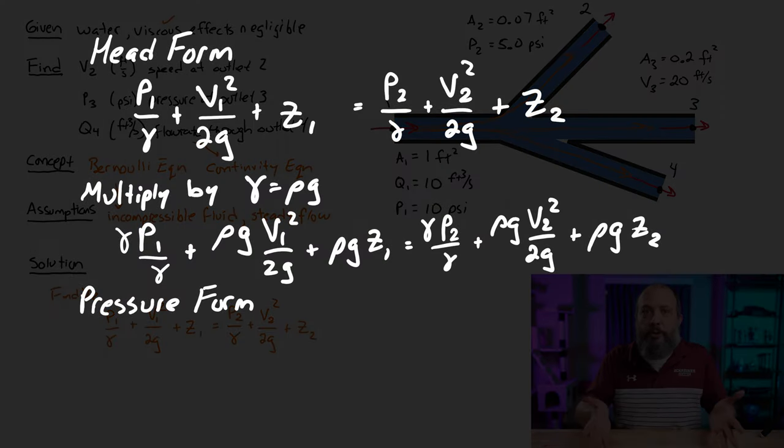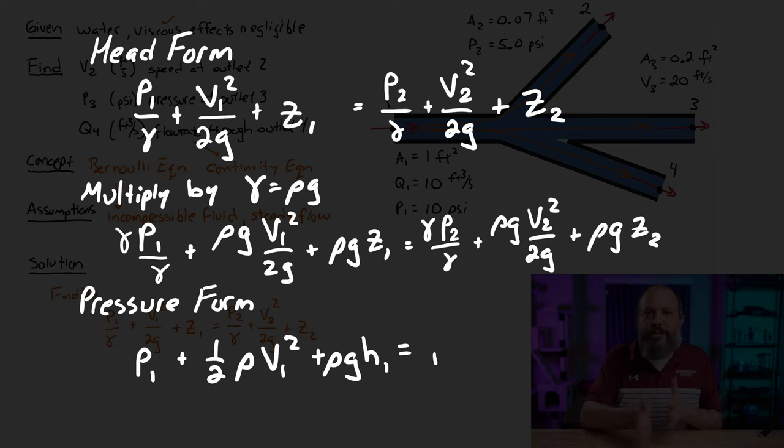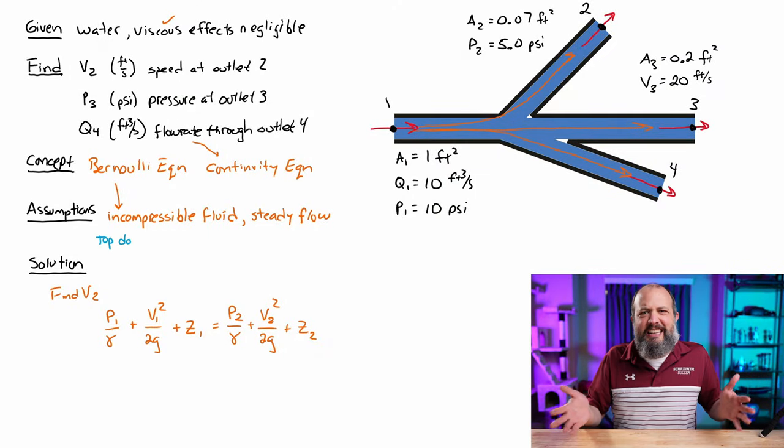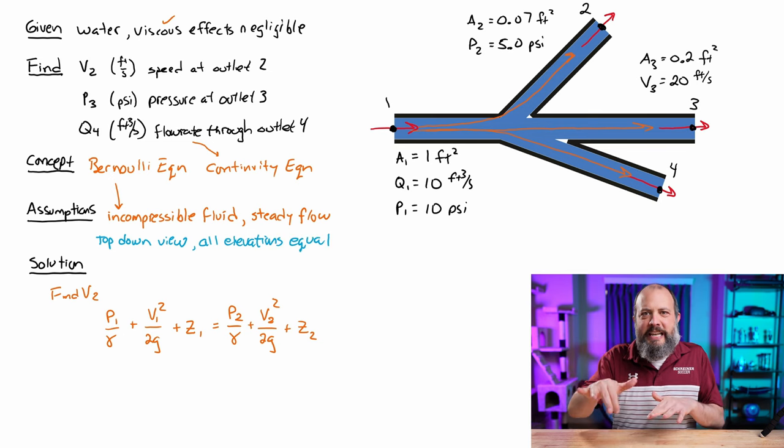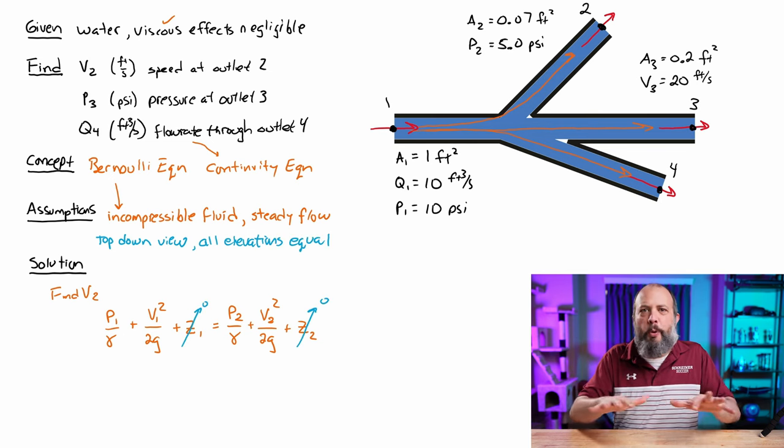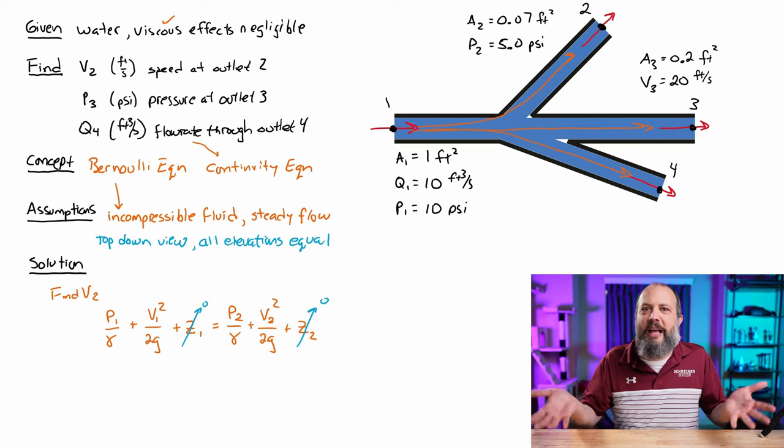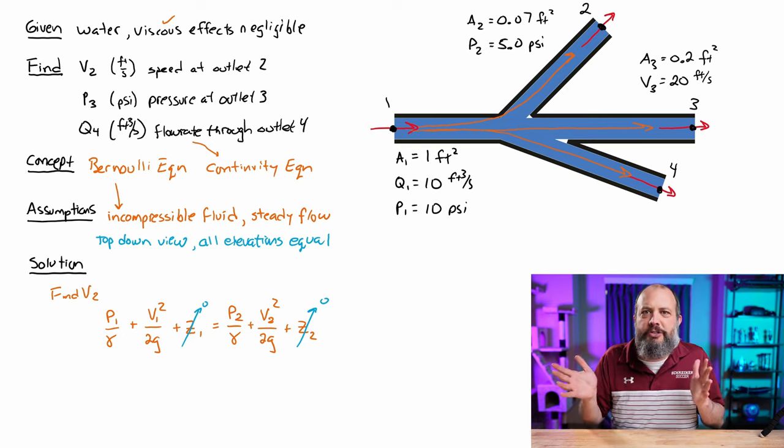Now, if we wanted the pressure version of Bernoulli's equation, we just multiply all three of these terms by specific weight. We would get pressure on one side. And since specific weight is rho g, the middle term g would cancel and we would get rho v squared over 2. Now, this problem didn't actually contain any information about height, so let's make an assumption here that this is a top-down view of this system, all at the same elevation.